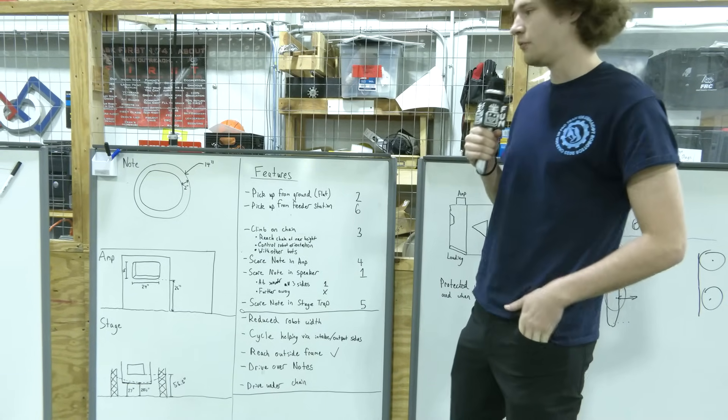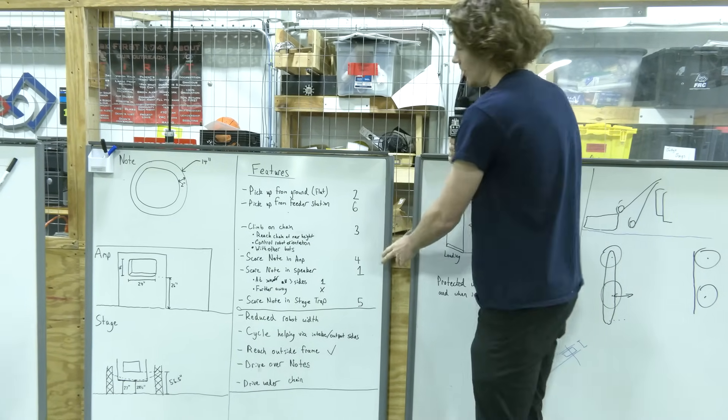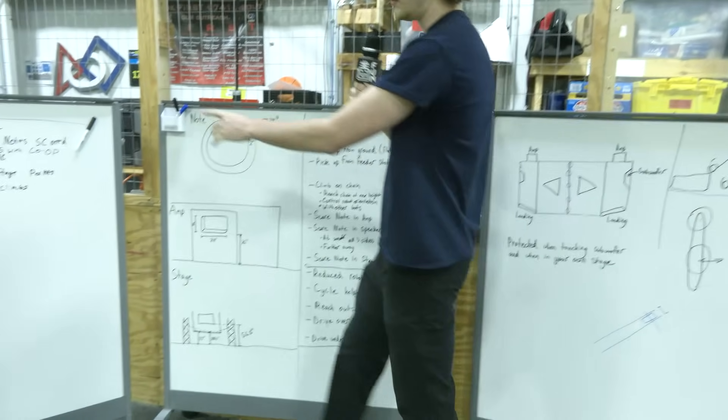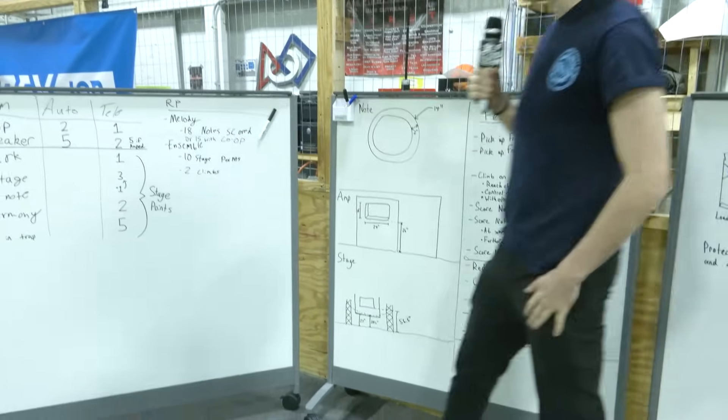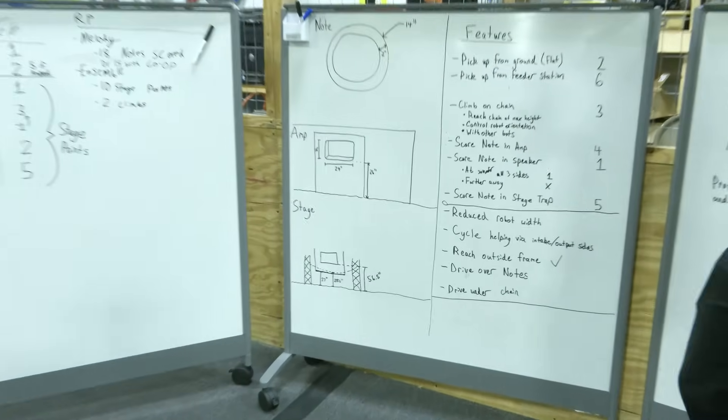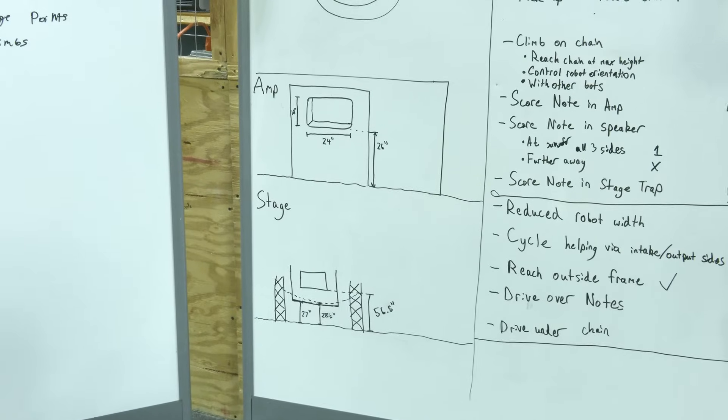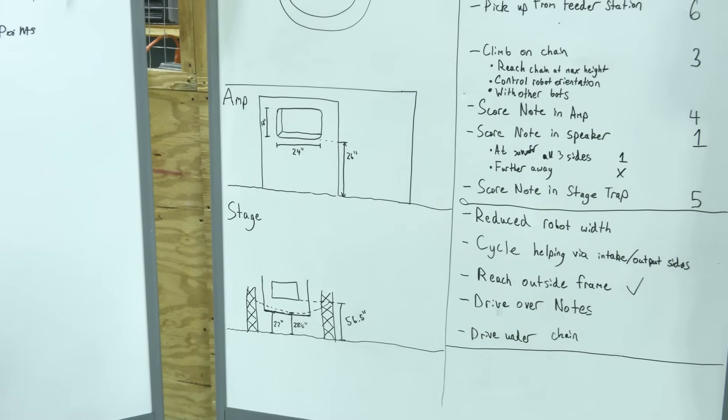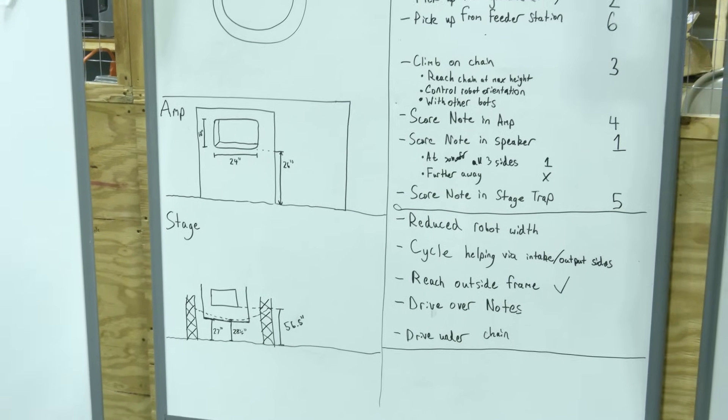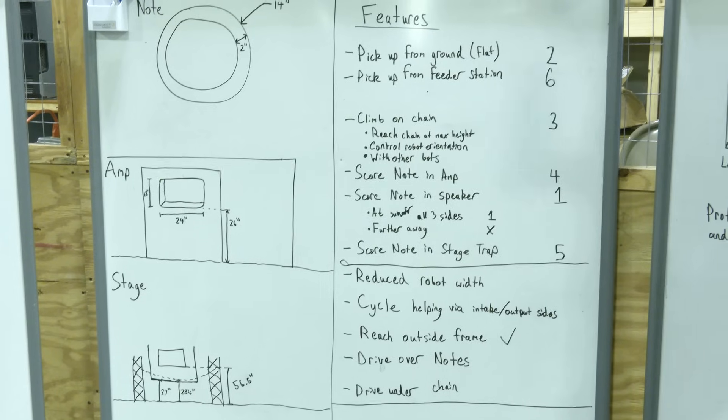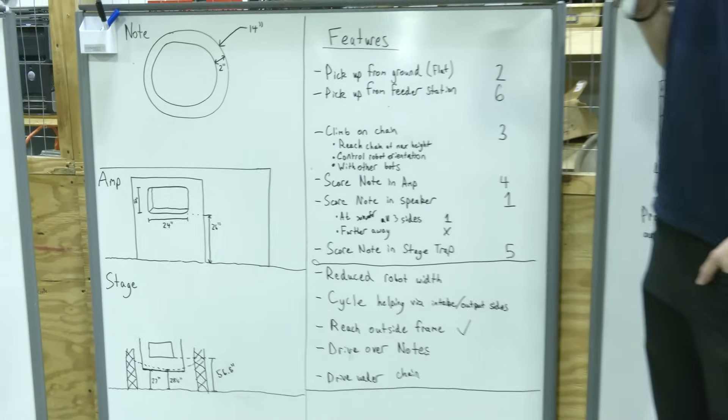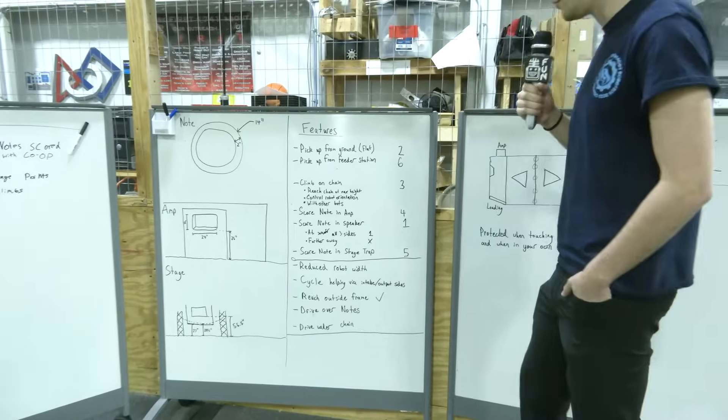The next step is going to be climbing on chain. The reason this is above the amp in this case is because we want to make sure we get the ensemble points. And that's going to be really big for ranking. And sometimes getting ranking points could be more beneficial than scoring points. Obviously winning the match is going to be the biggest priority because that's going to be 2 RP. But getting the ensemble is going to be very beneficial.